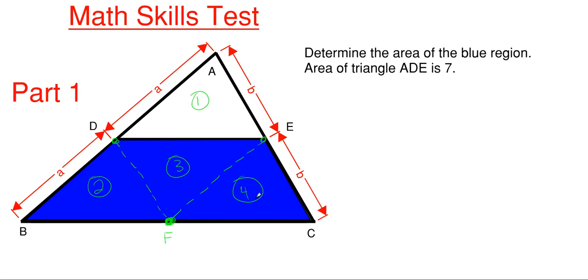All four of these triangles are equal in area. We're told that triangle ADE at the top has an area of 7, so triangles two, three, and four all have the same area of 7 due to the midline theorem.